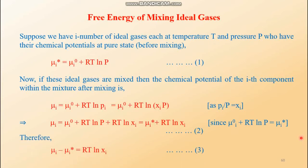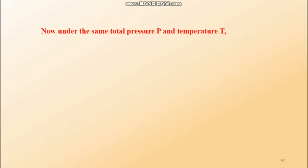Therefore the difference μᵢ − μᵢ* = RT ln xᵢ (Equation 3). This is the difference between the chemical potential of the component gas within the mixture and the chemical potential of the component gas when not in the mixture — i.e., the change in chemical potential due to mixing. This is evaluated under the same total pressure P and temperature T.